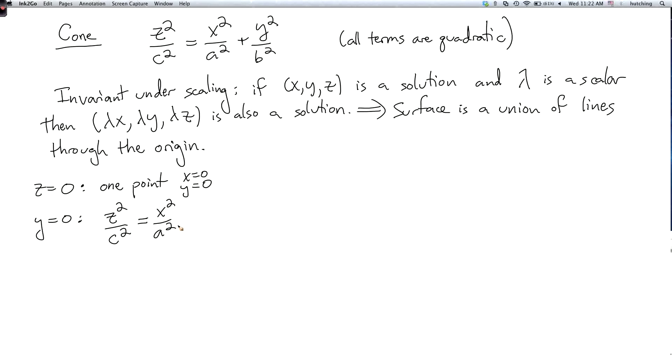Now we can take the square root of both sides and we have to put in a plus or minus sign so we get that z over c equals plus or minus x over a.